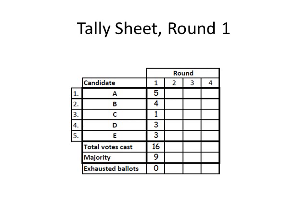The votes are totaled and a majority is computed. If any candidate had received a majority of the votes cast, he would be the winner. But because no candidate got a majority in the first round, the candidate receiving the fewest votes is eliminated — candidate C in this case.